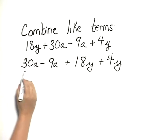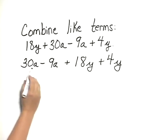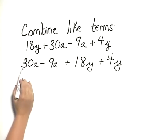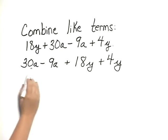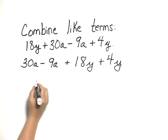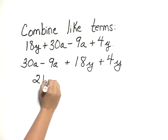We can combine these terms. We have 30a minus 9a. We can subtract the coefficients — 30 minus 9 — which gives us 21a.